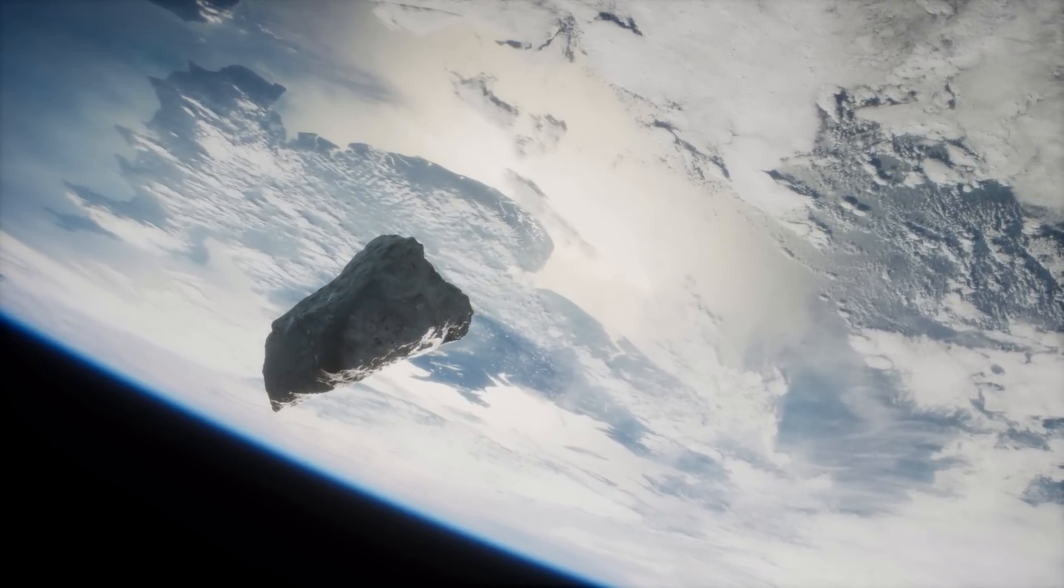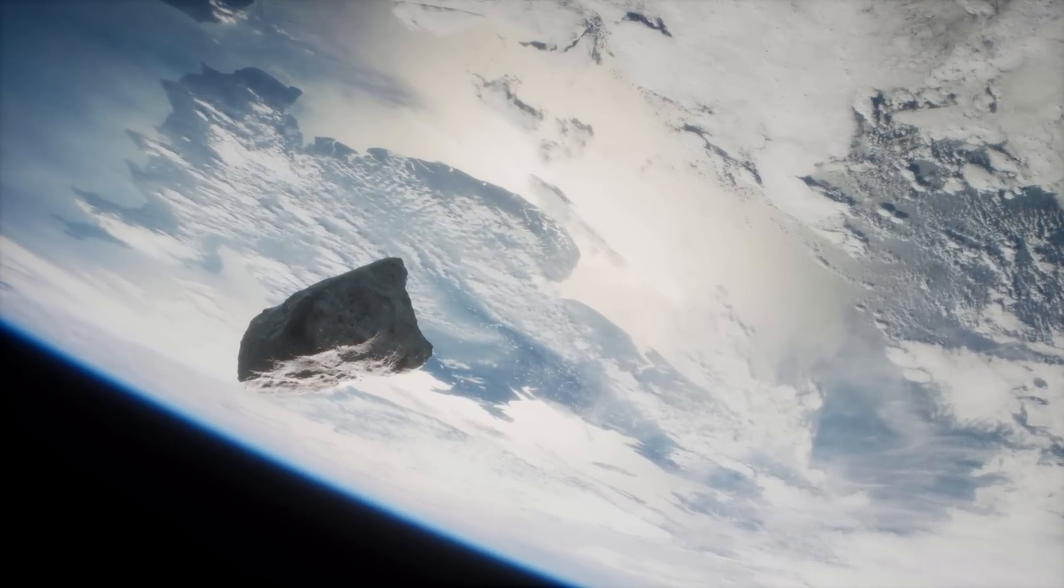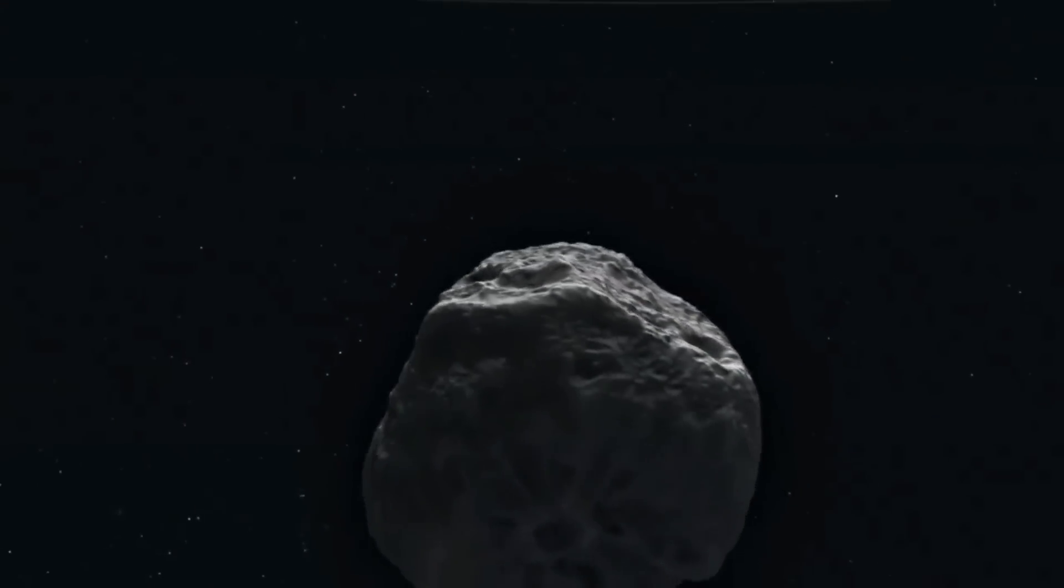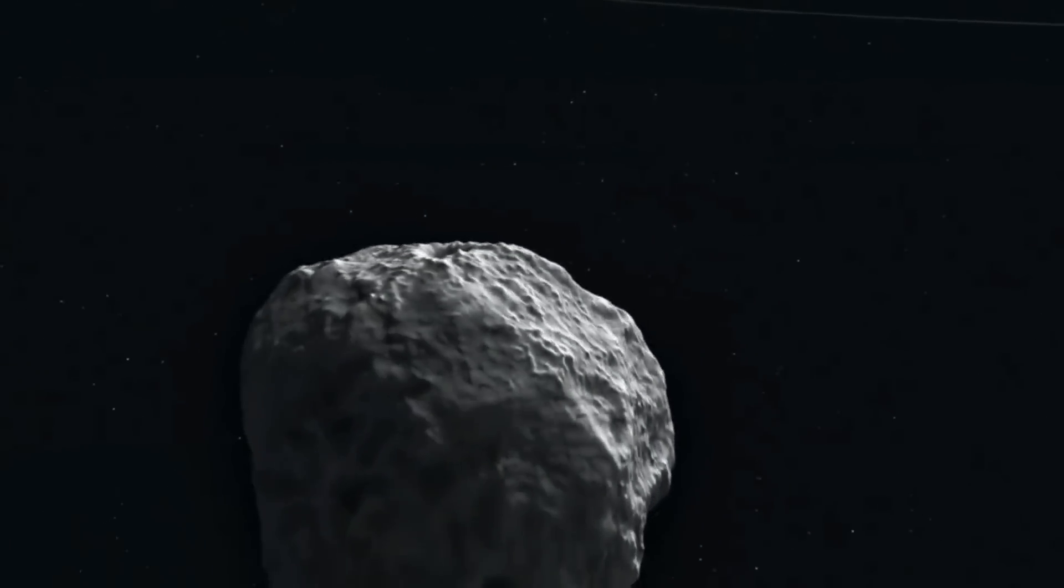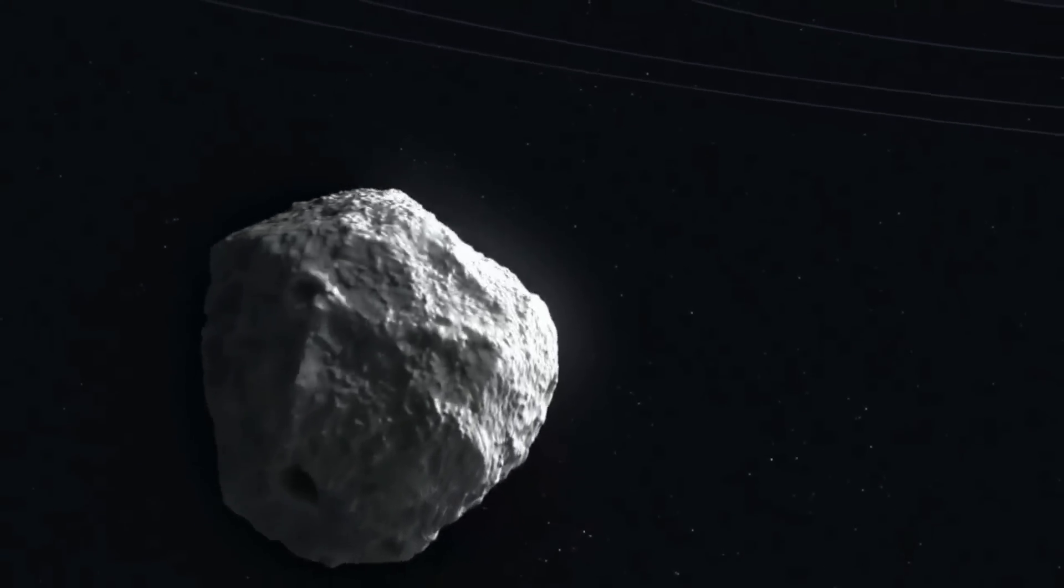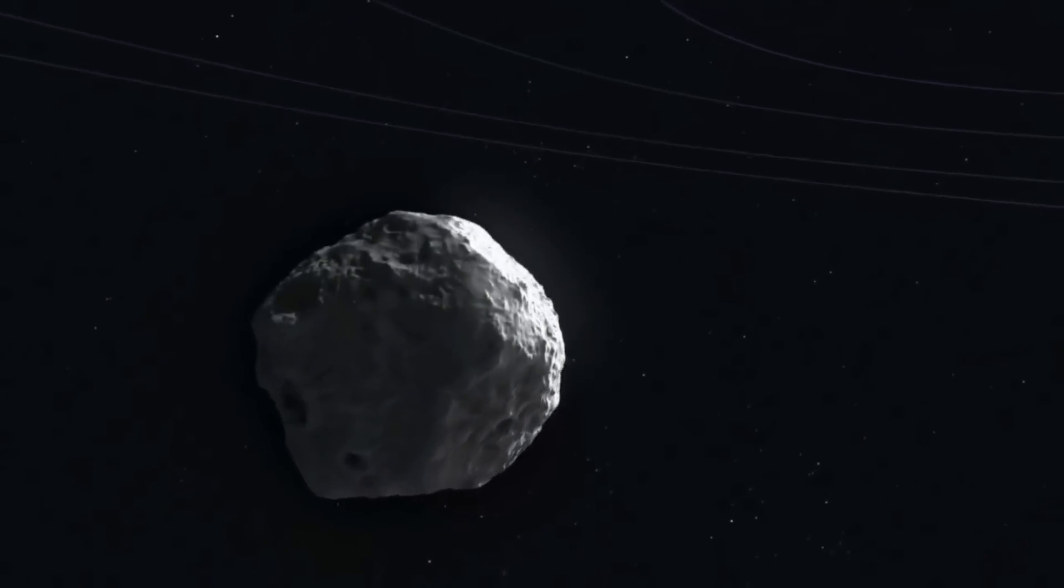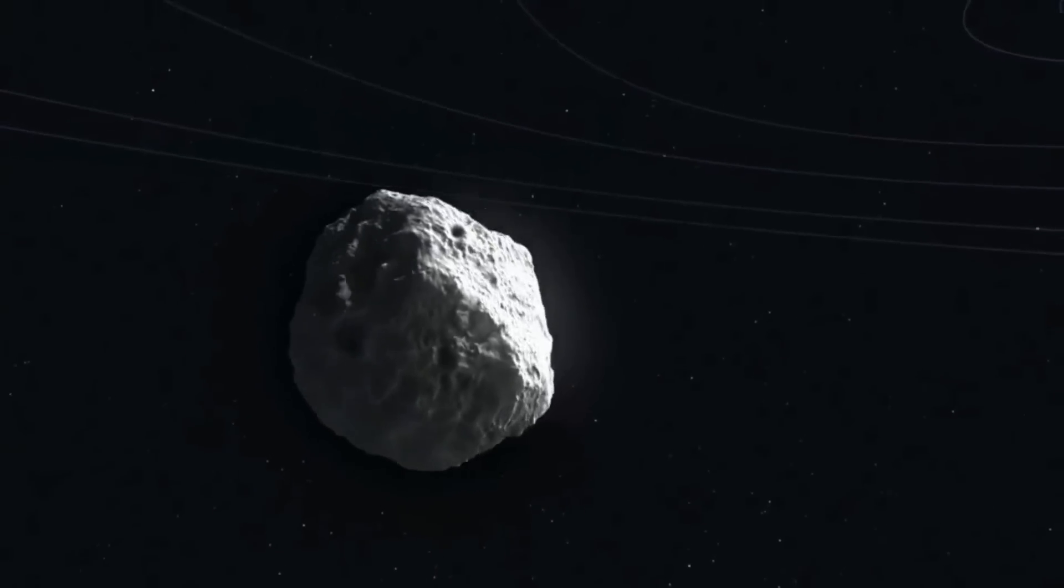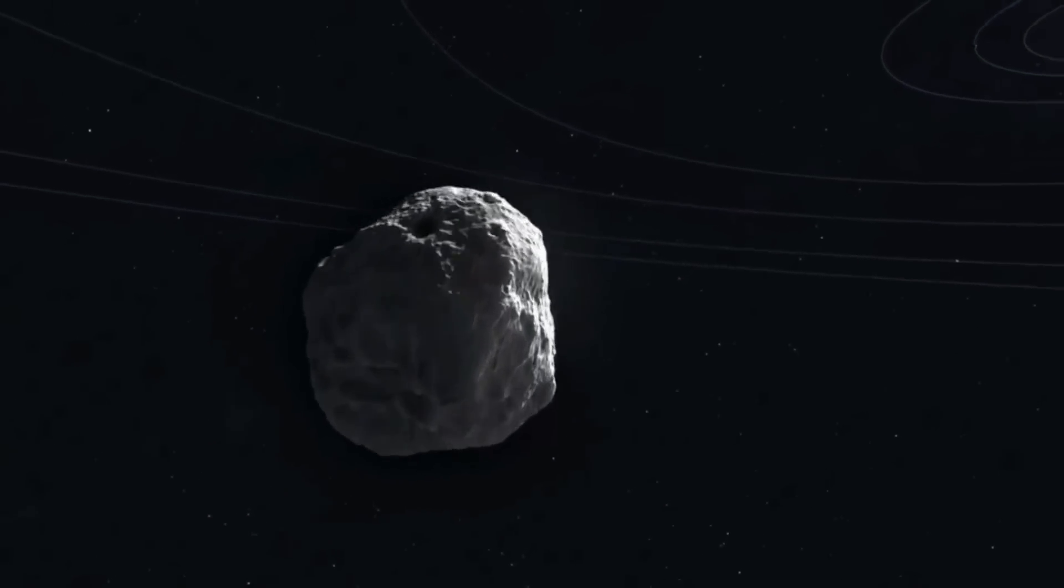Asteroid 7335, which used to be called 1989 JA, is about 1.1 miles across or 1,800 feet. If you hear noises in the background, my granddaughter, who's a little over one years old, is here staying with me today.